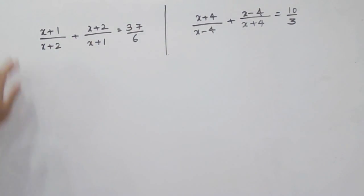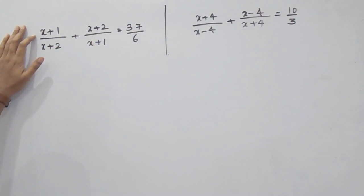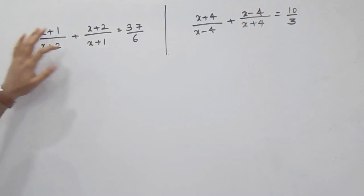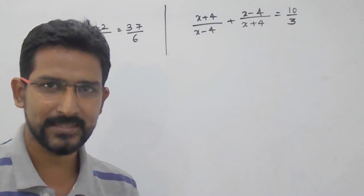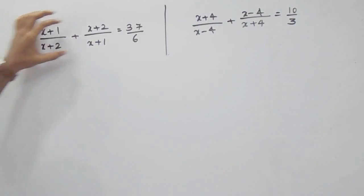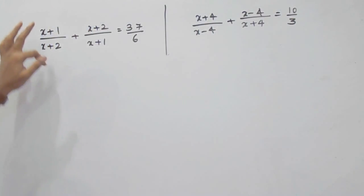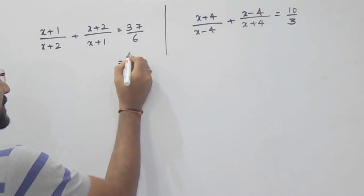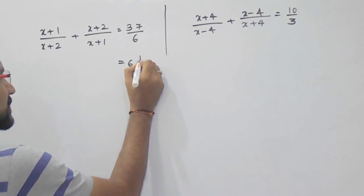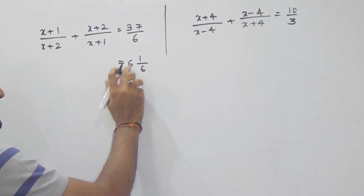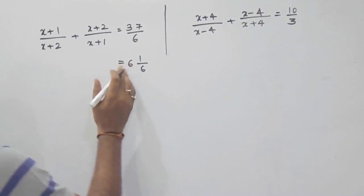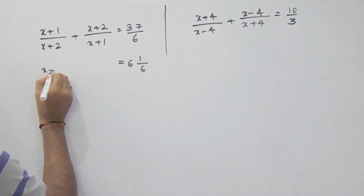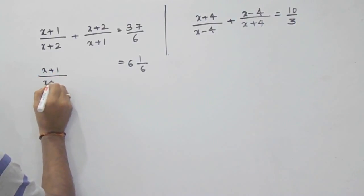For example, if you want to solve this equation: (x+1)/(x+2) plus (x+2)/(x+1) equals 37 by 36. If you see that this term and this term are both reciprocal of each other, and on the right hand side if you write 37 by 36, it will be nothing but 6 and 1 by 6 — that is (36+1)/6 = 37/6. So on both sides the terms are in the form of reciprocal of each other.